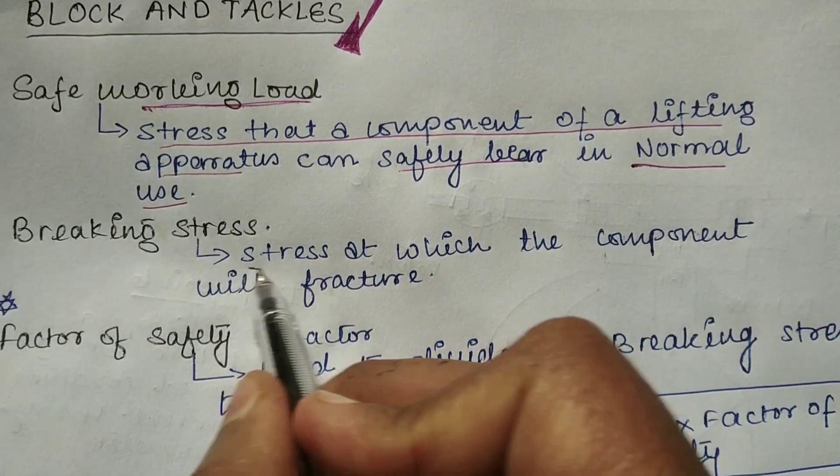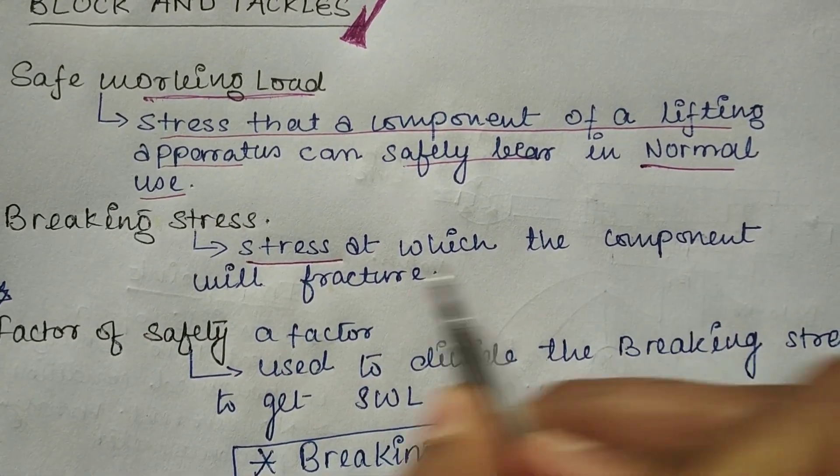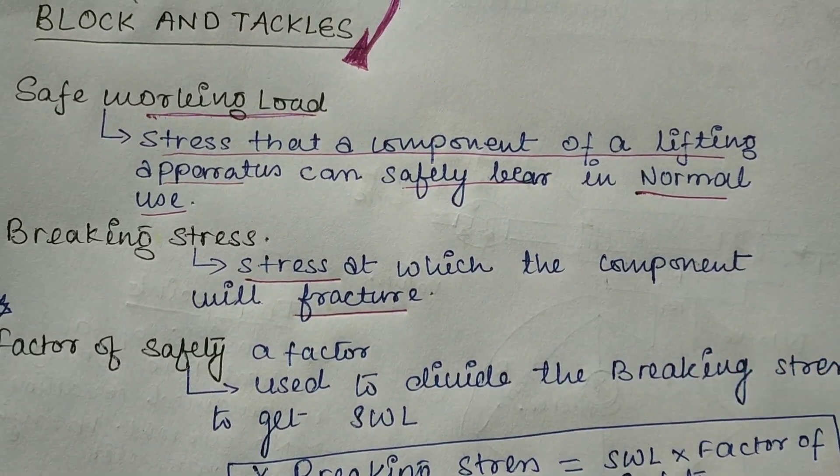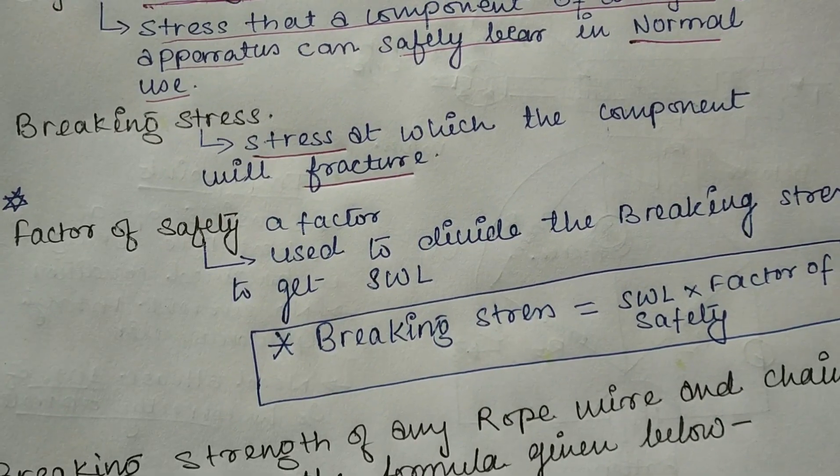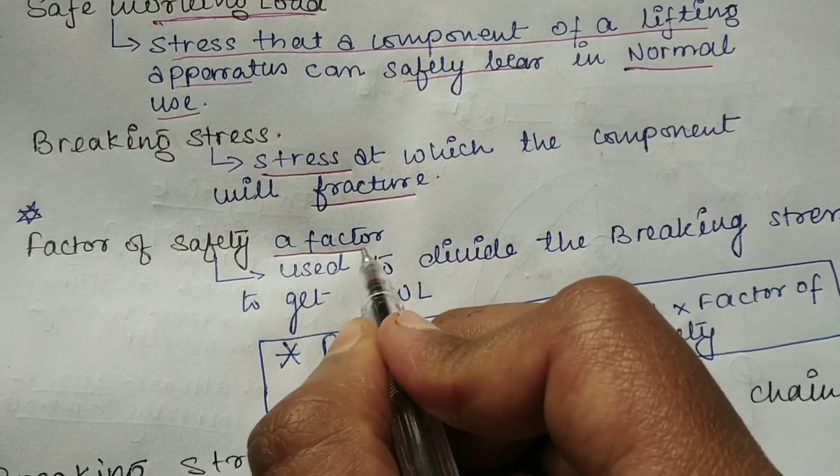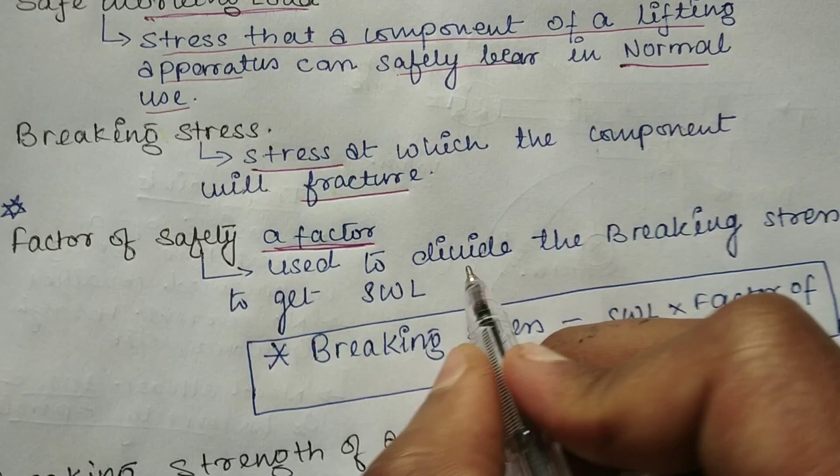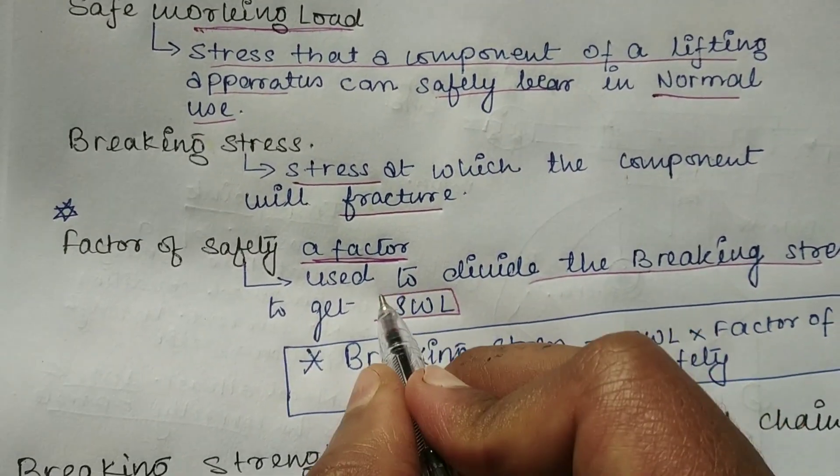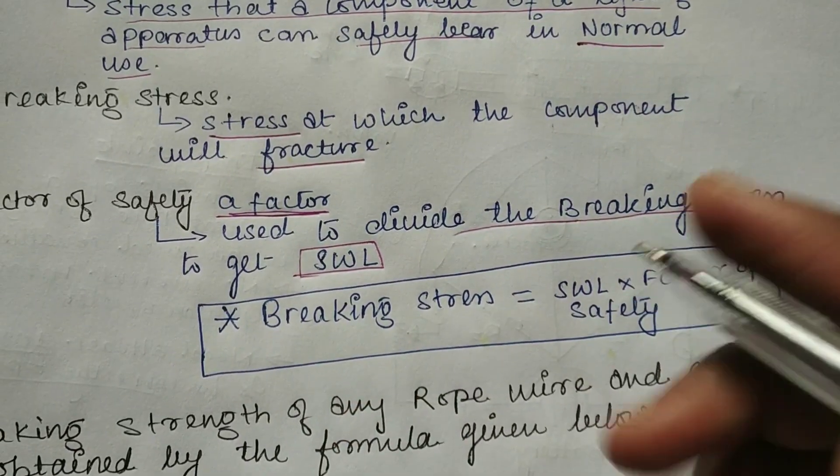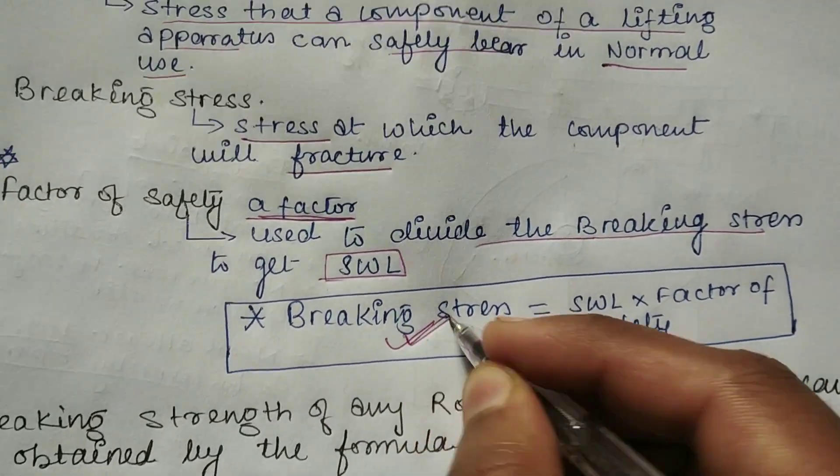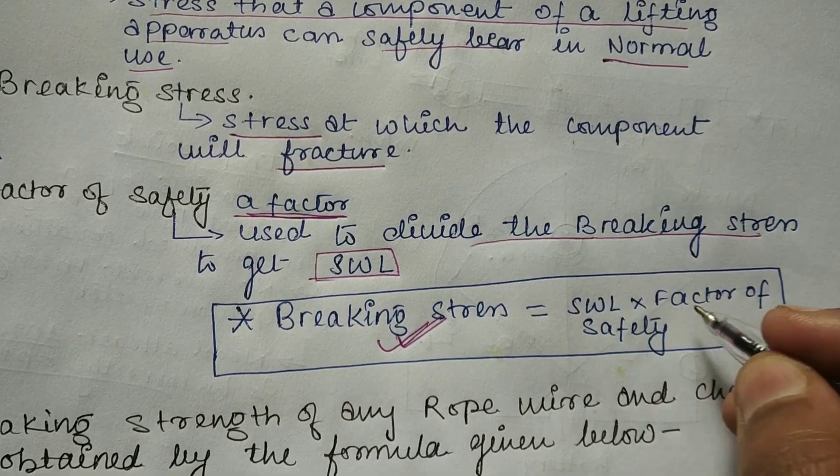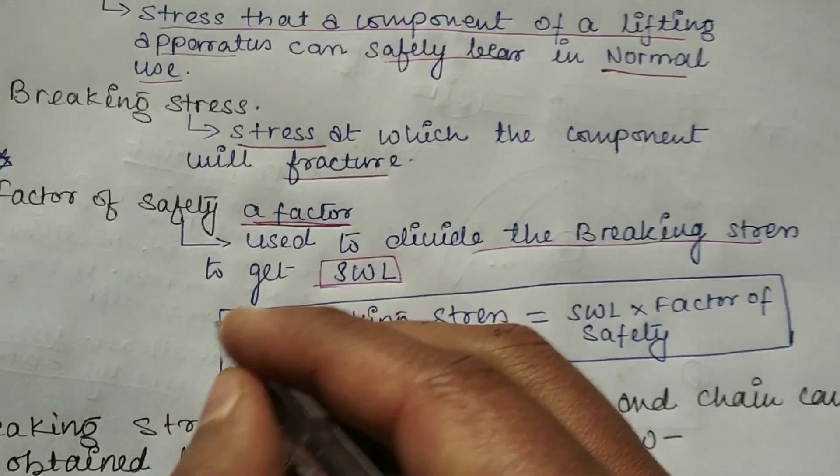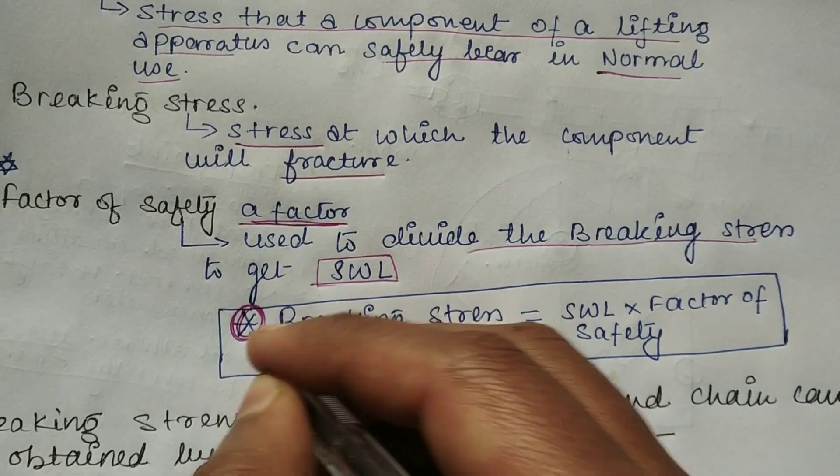Now breaking stress – the stress at which the component will fracture. Factor of safety is a factor used to divide the breaking stress to get the safe working load. This is an important formula you need to remember: breaking stress equals safe working load multiplied by factor of safety. This is frequently used.